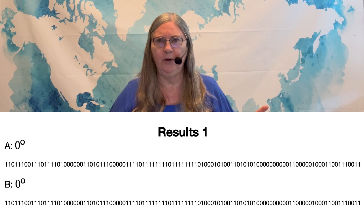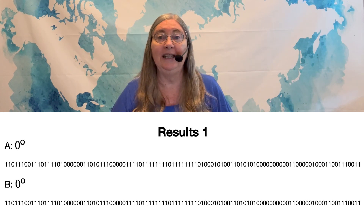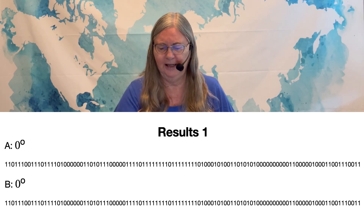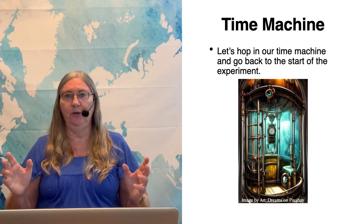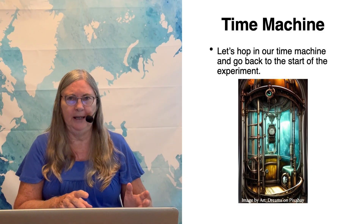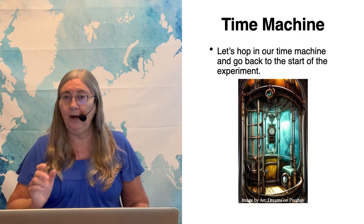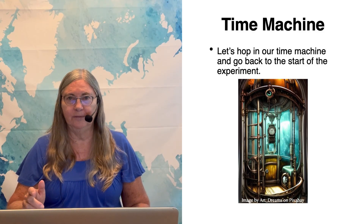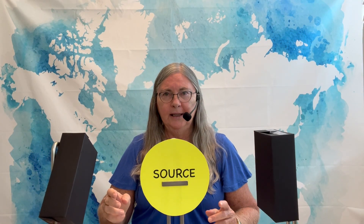I wrote out a hundred of them to make it easier to see what's happening. Now for the fun part — let's say we have a time machine. We're going to go back to the beginning of the experiment and change one of the detectors, but not the other. For the second run, we're going to take detector A and change the angle so it's now 22.5 degrees different from the angle of the other detector.